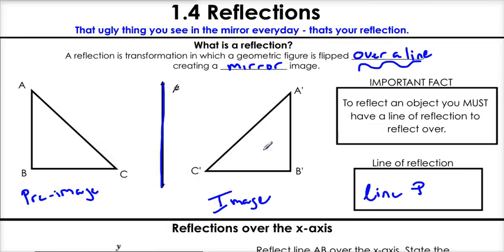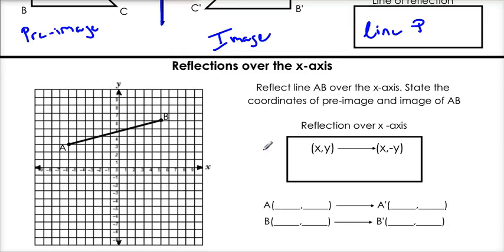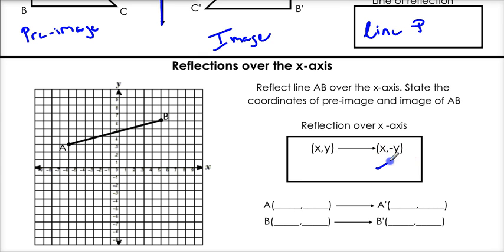First we're going to start with a reflection over the x-axis. We're going to reflect line AB over the x-axis and state the coordinates of the pre-image and the image of AB. To do this, there's a rule: whenever you reflect over the x-axis, you take the coordinate (x, y) and you change the sign of y. So you get (x, negative y). That means if it's positive, it becomes negative; if it's negative, it becomes positive.